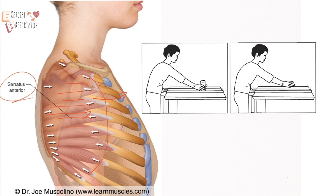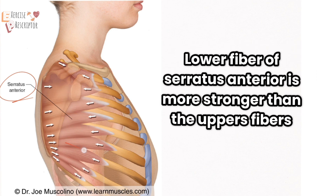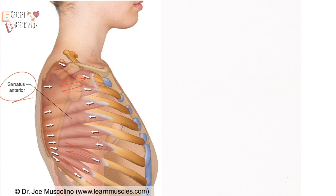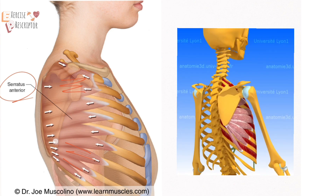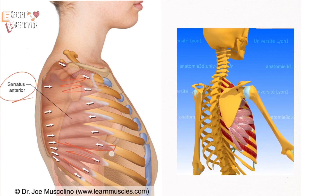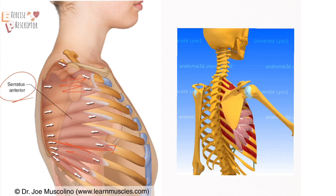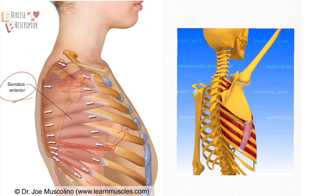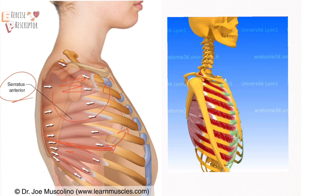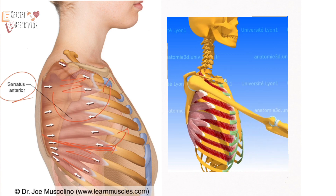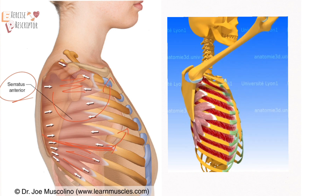The lower fibers of the serratus anterior are stronger than the upper fibers. When the lower fibers contract, they pull the inferior medial aspect of the scapula, helping to upward rotate the scapula. This upward rotation of the scapula is a coupled motion that also occurs with elevation of the arm.